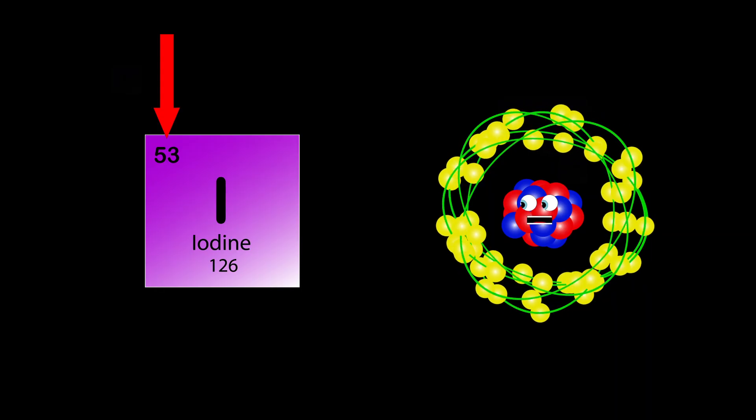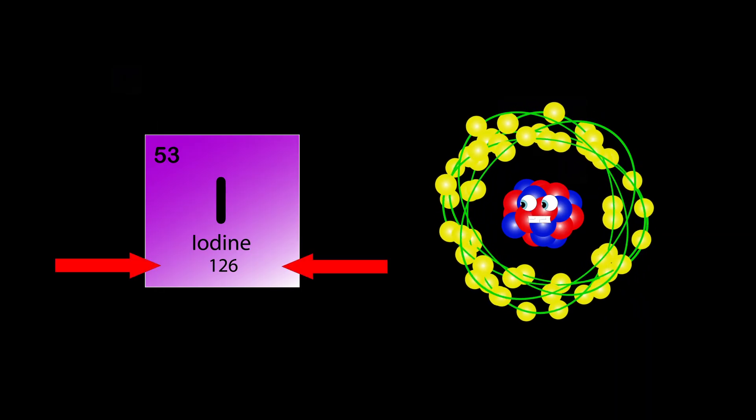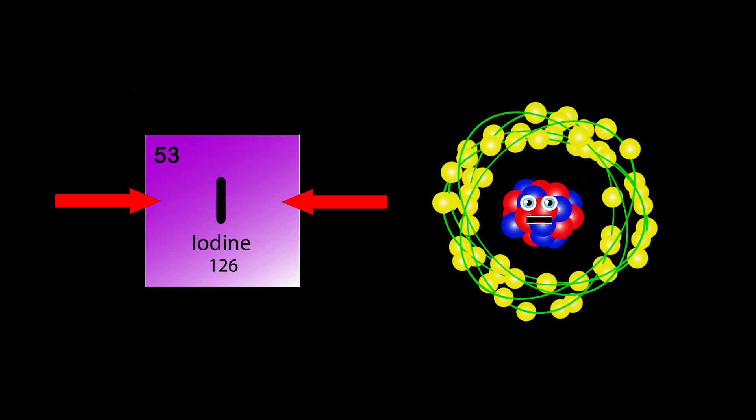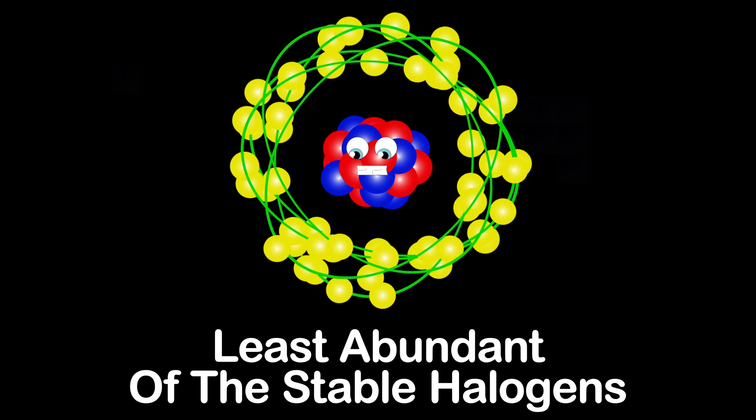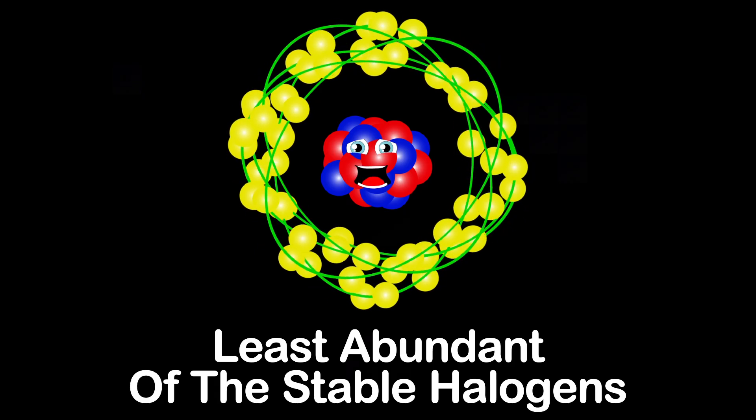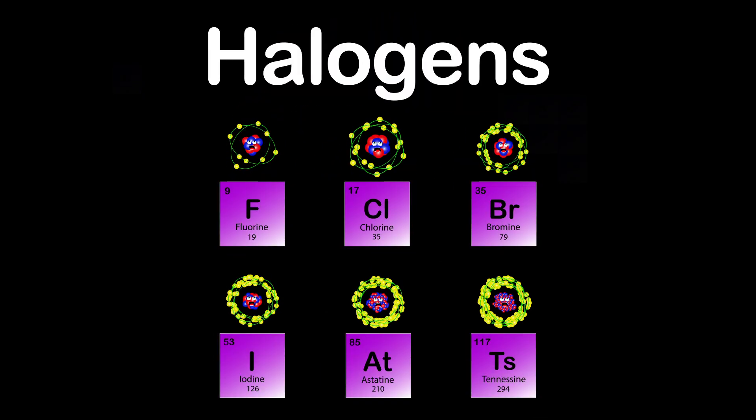I am Iodine, my atomic number is 53, my atomic mass is 126, my symbol's I as you can see. Iodine occurs in many oxidation states, and I'm the least abundant of the stable halogens to date.